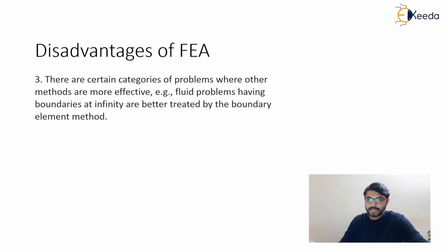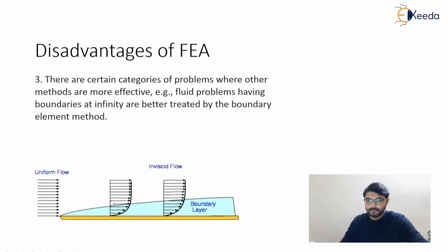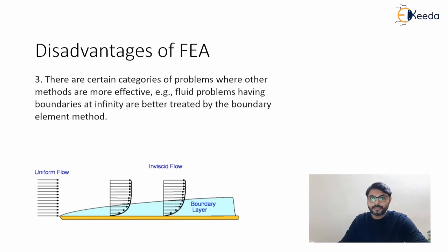In some categories of problems, other methods are more effective. For example, in fluid problems categorized by boundary layers, if infinity boundaries are present we have to assign elements to those infinity boundaries, which becomes very difficult to calculate using FEA. Instead, the boundary element method is more effective than FEA for fluid problems that consist of infinity boundaries.